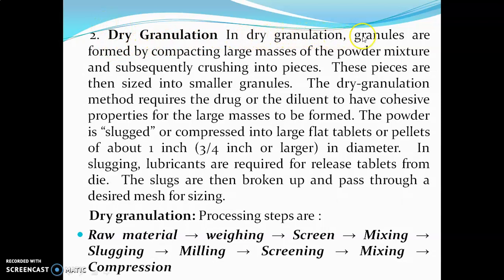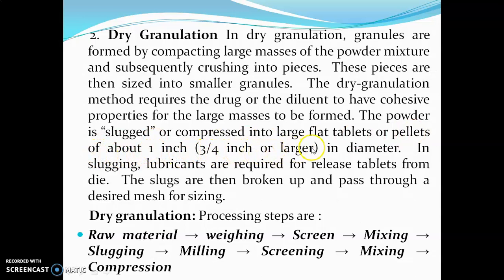The second method is dry granulation. In dry granulation, granules are formed by compacting large masses of powder mixture and subsequently crushing them into pieces, which are then sized into smaller granules. This method requires the drug or diluent to have cohesive properties. The powder is slugged or compressed into large flat tablets or pellets of about one inch (3×4 inch) or larger in diameter. Lubricants are required to release tablets from the die. The slugs are then broken up and passed through a desired mesh for sizing.